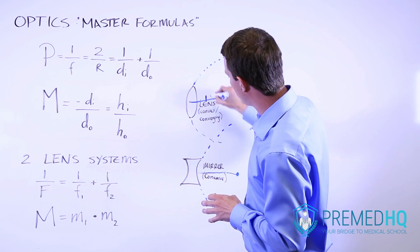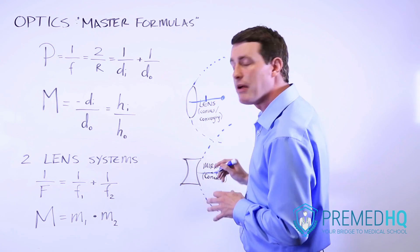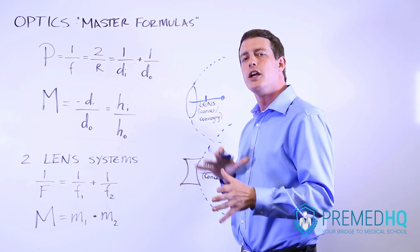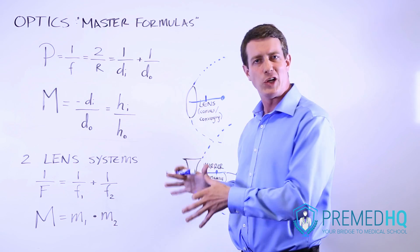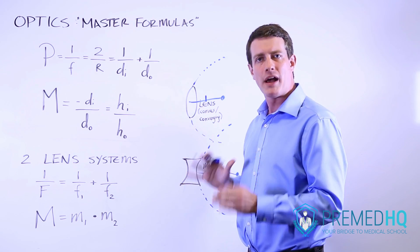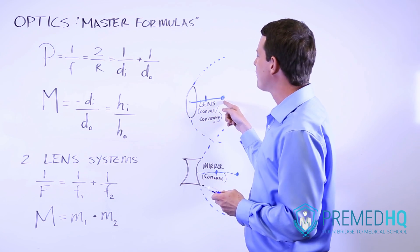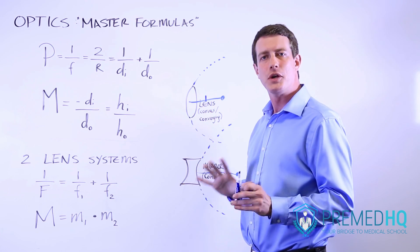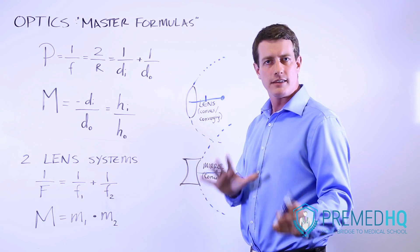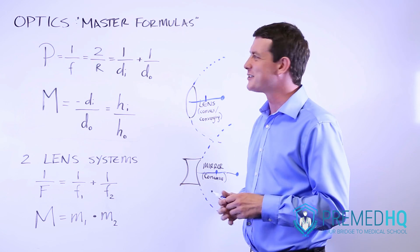Half of that distance is where your focal point will be, and depending on the type of lens or mirror your focal point may be on one side or the other. But realize that no matter what, it will be half of the radius of curvature. That is always going to be true in any lens, any mirror, and any optical system.